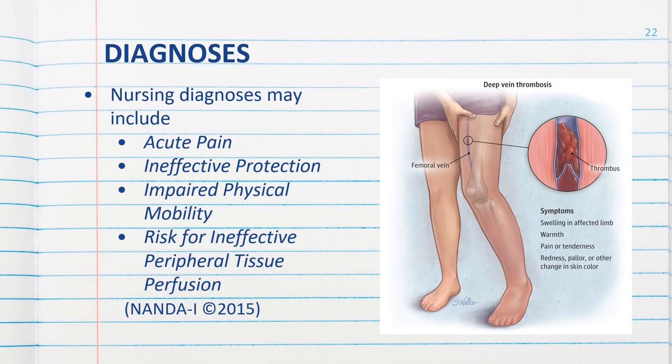Nursing diagnoses that apply to the patient with DVT include: acute pain, ineffective protection, impaired physical mobility, and risk for ineffective peripheral tissue perfusion. Once they have a DVT, it's no longer 'risk for' — they may have ineffective peripheral tissue perfusion. Before they are diagnosed, they may be 'at risk for.'